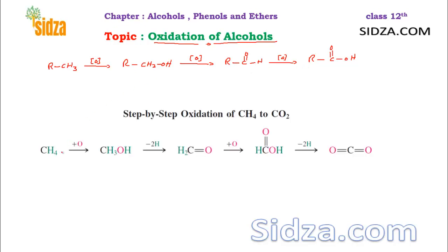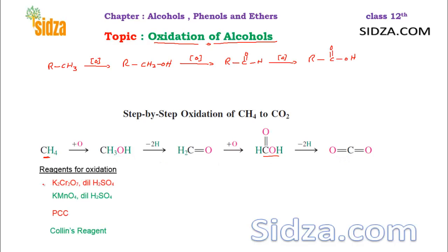For example, take methane — the simplest alkane. Oxidize it and you get methanol. Further oxidize and you get an aldehyde, then a carboxylic acid, and further oxidation gives CO2. The common oxidizing agents we use are: potassium permanganate (KMnO4) in acidic medium, potassium dichromate (K2Cr2O7) in acidic medium, PCC (pyridinium chlorochromate), and Collins reagent.